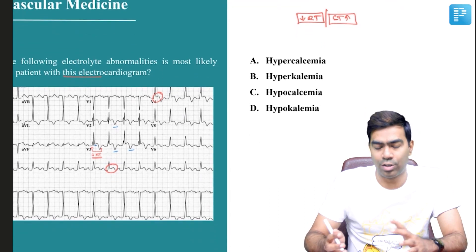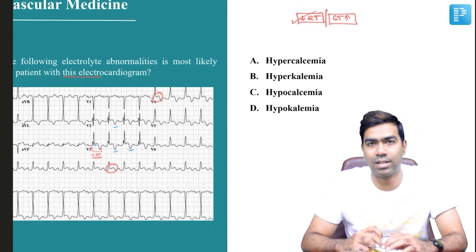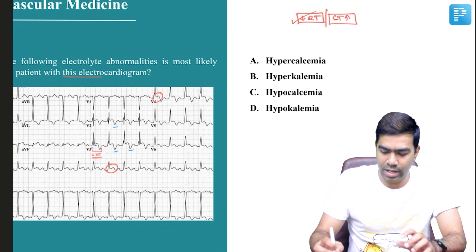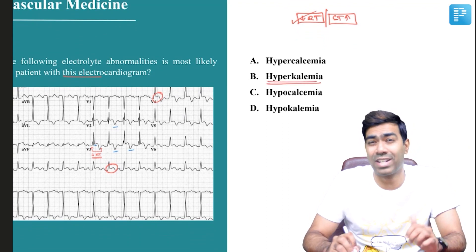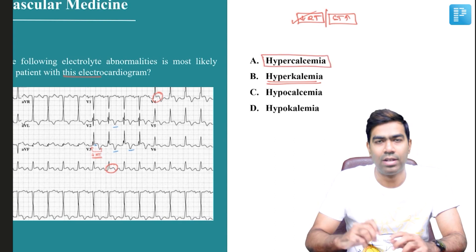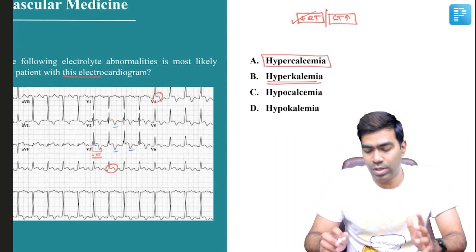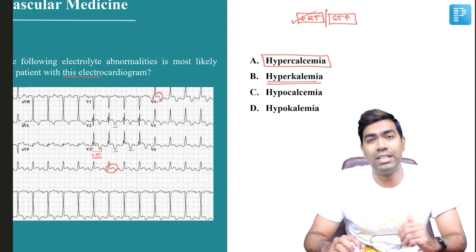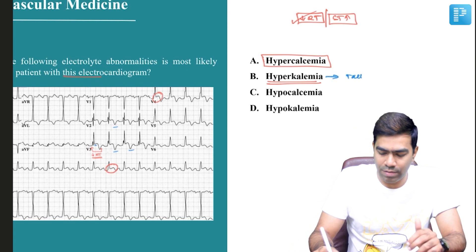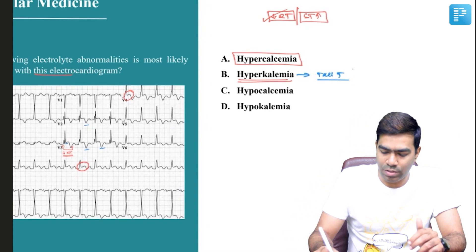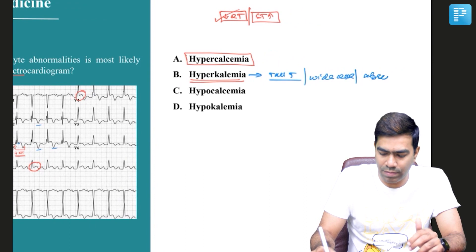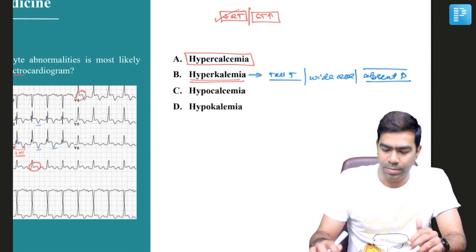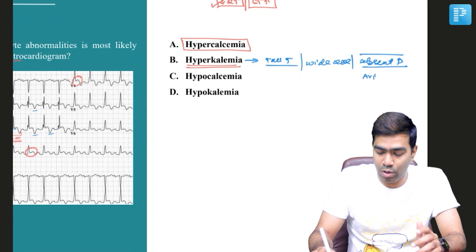So what are the electrolyte abnormalities which can result in short QT and ST segment elevation? Theoretically speaking, it can happen in hyperkalemia also. But in exams, you're going to make a diagnosis of hypercalcemia. Even though short QT and ST segment elevation can be present in hyperkalemia, you will see other changes as well in hyperkalemia — like tall T waves, wide QRS, and plus or minus absent P waves, as well as various AV blocks and bundle branch blocks.